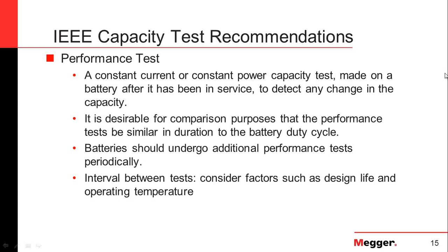A performance test is much like an acceptance test — constant current or constant power — but it is made after the battery has been in service for some period of time, typically two years. IEEE recommends that the test duration be similar to that of the duty cycle. You'll want to do these on a continuous basis; we'll get into the recommended frequencies shortly.